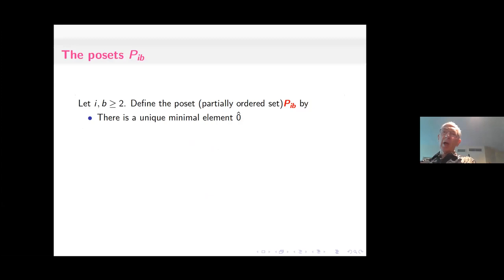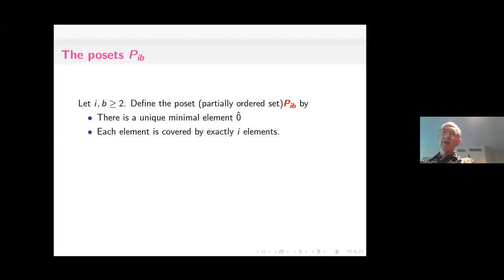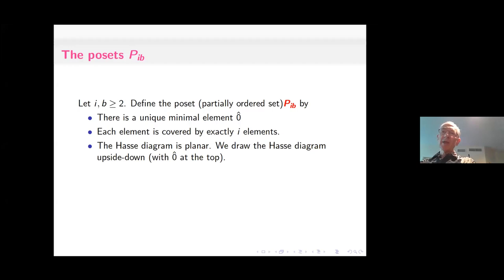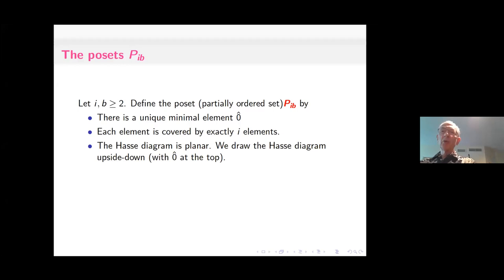I and B will be integers greater than or equal to 2, and I'll define these POSETs as follows. There is a unique minimal element 0. Each element is covered by exactly I elements — that is, I elements lie above each element with nothing in between. The Hasse diagram of the POSET is planar, with no crossing edges. I'll be drawing my Hasse diagrams upside down from the usual convention, with the minimal element at the top — just a matter of convenience, and I'll explain why soon.